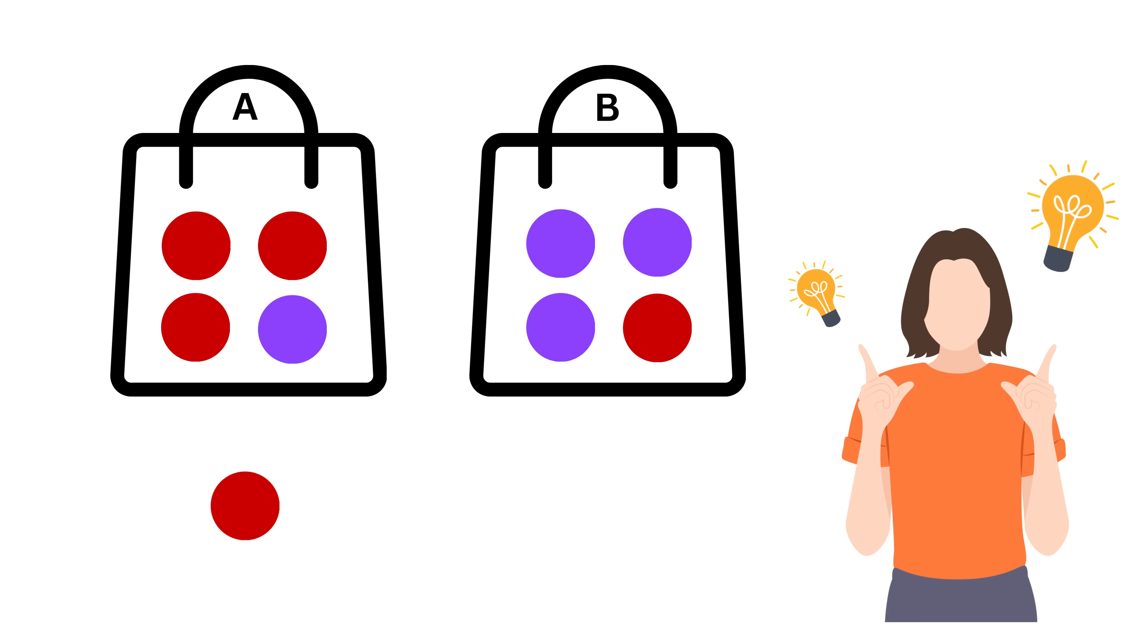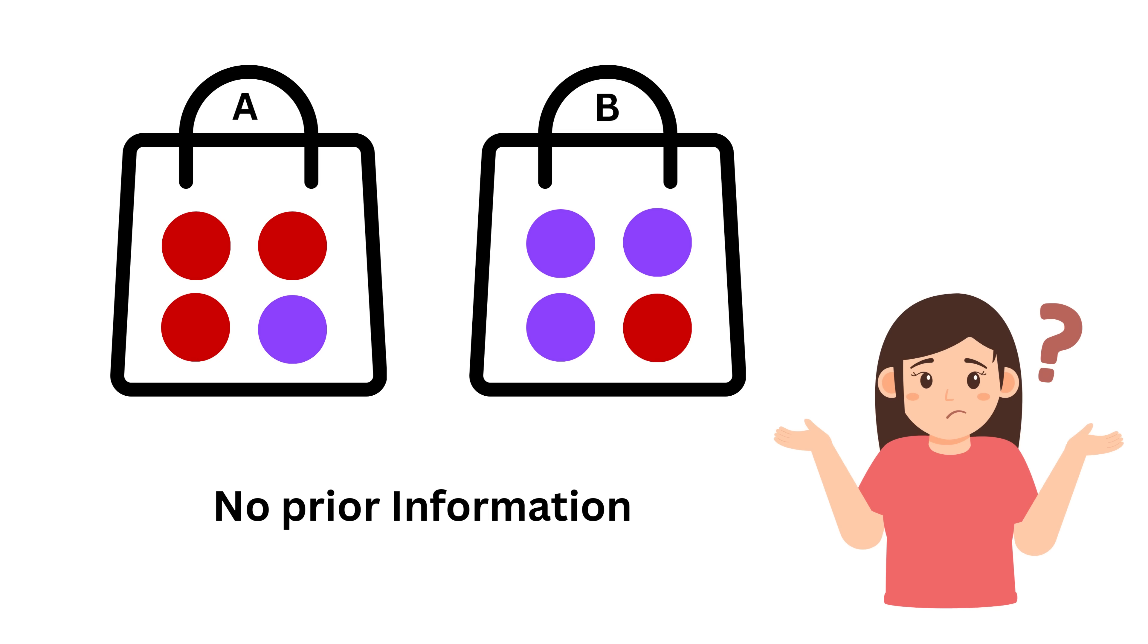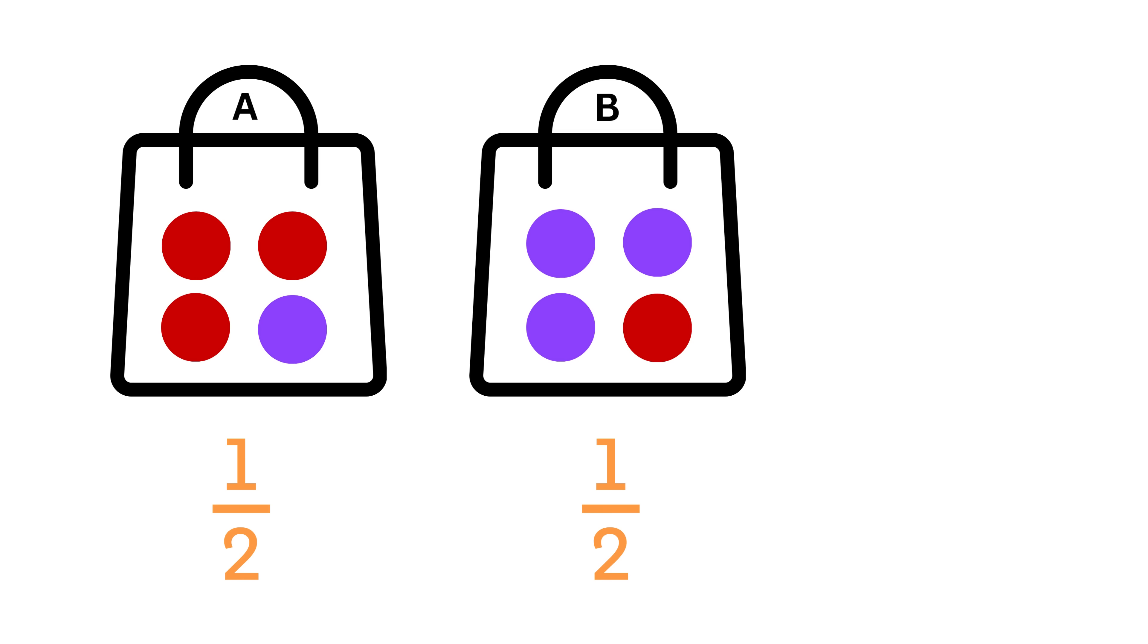Let me tell you the main intuition behind Bayes' theorem. See, initially, when there was no outcome, meaning when no ball was selected, we had no prior information about which bag would be picked. So both bag A and bag B were equally likely with a one out of two chance each.